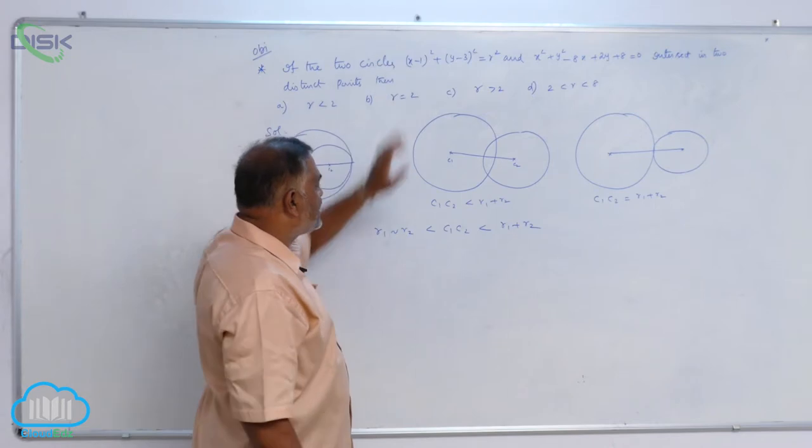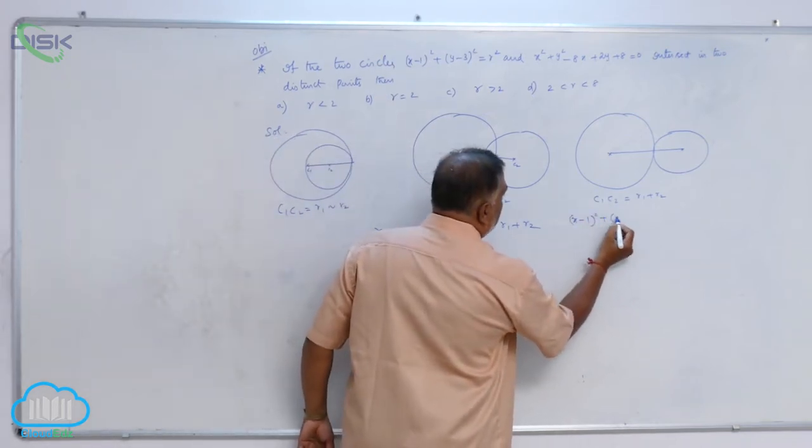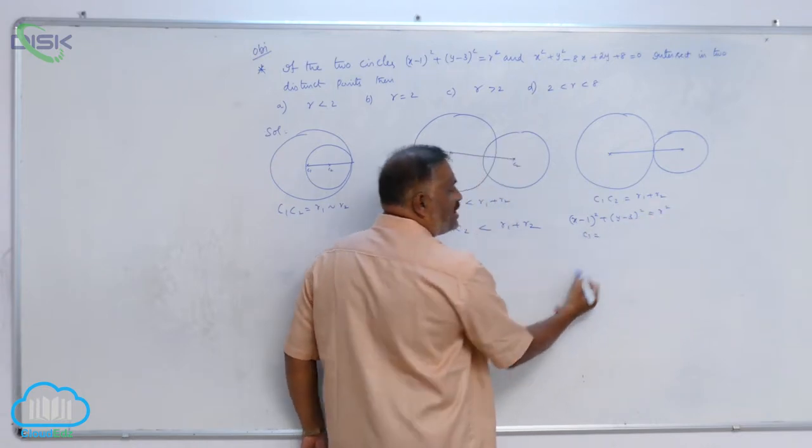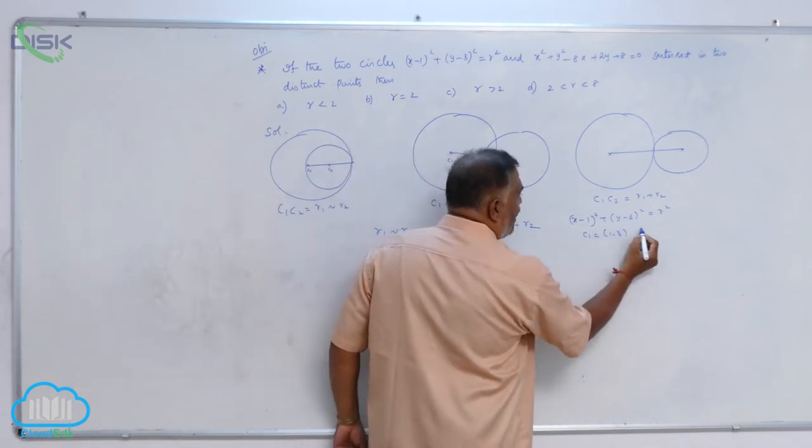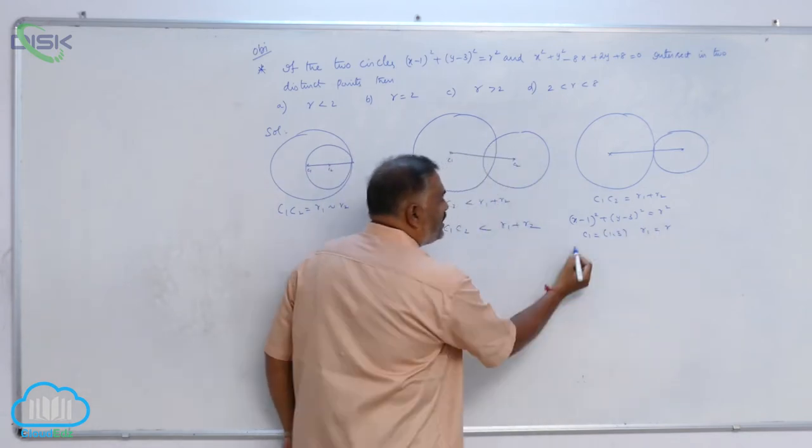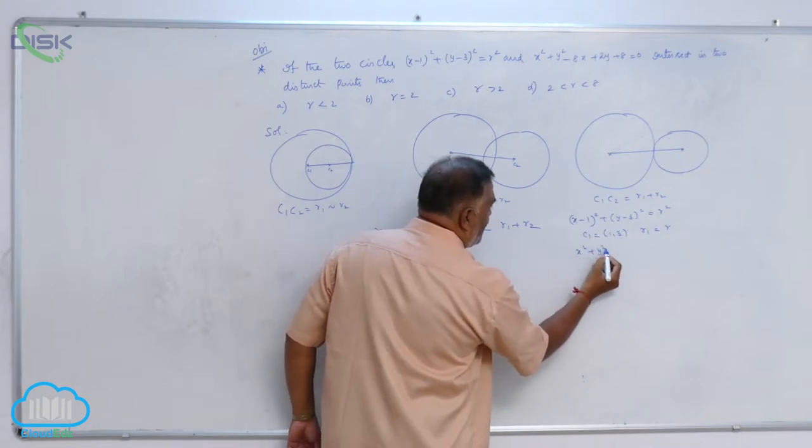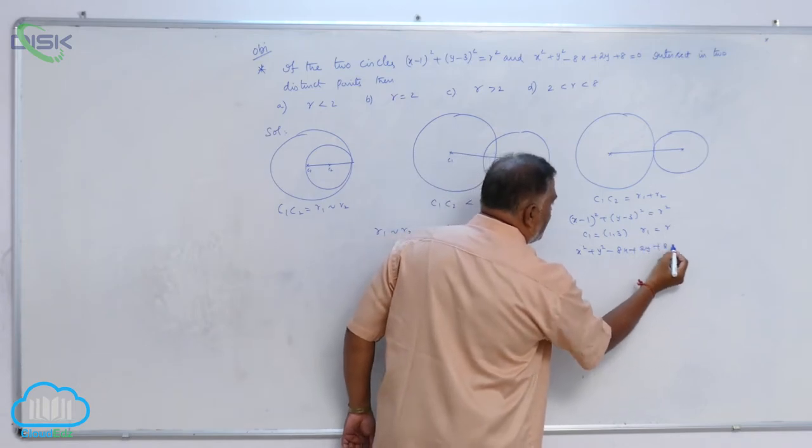Now coming to the first circle, here (X minus 1)² plus (Y minus 3)² equals R². The second circle is X² plus Y² minus 8X plus 2Y plus 8 equals 0.